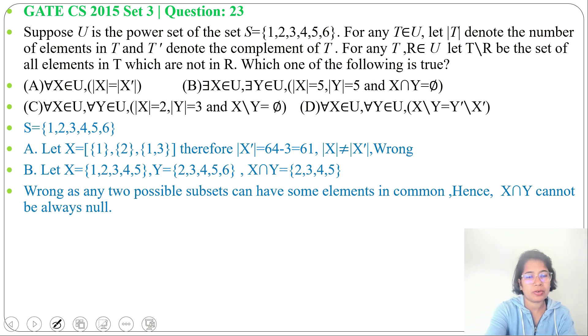Next option C: for all X belongs to U, for all Y belongs to U, |X| equals 2, |Y| equals 3, and X\Y equals 5. Let's take an example. Suppose X contains {2, 5}, Y contains {1, 3, 5}. Here, |X| equals 2, |Y| equals 3.